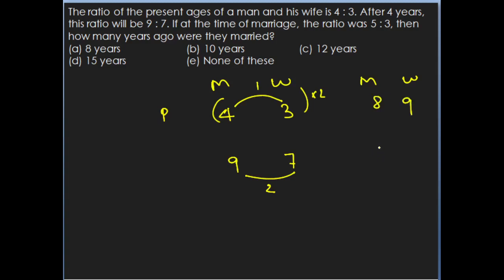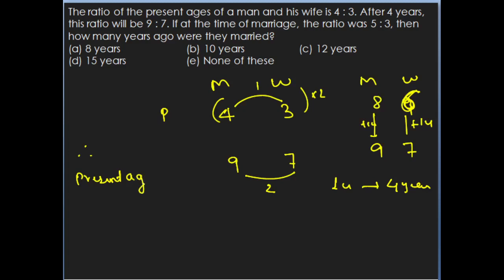Multiplying by 2: present ratio becomes 8 is to 6, and after 4 years it is 9 is to 7. The increase is 1 unit for each, so 1 unit value equals 4 years. Therefore the present age of the man is 8 units equals 8 into 4 equals 32 years, and the wife's present age is 6 units equals 6 into 4 equals 24 years.